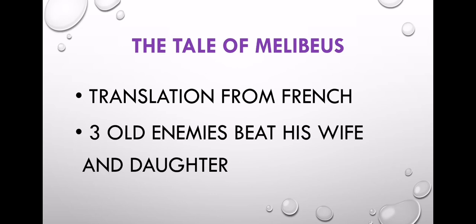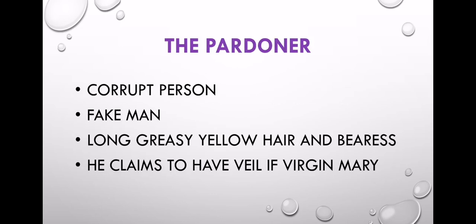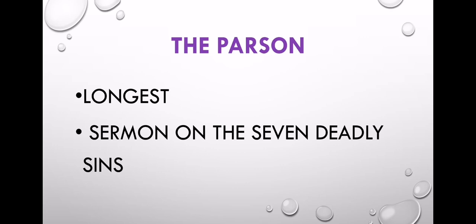In one tale, three old enemies beat the hero's wife and daughter. The Pardoner is a corrupt, fake man with long, greasy yellow hair. He claims to have a veil of the Virgin Mary.